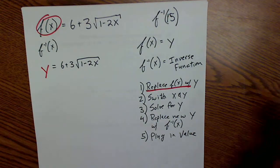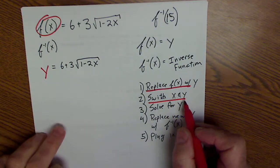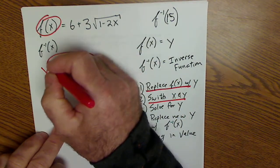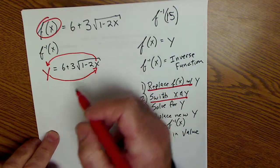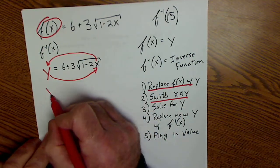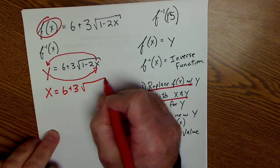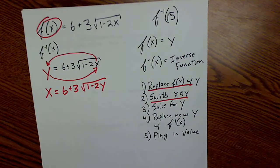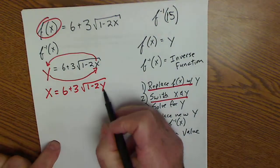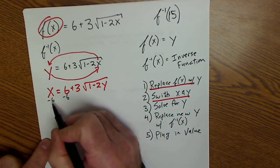Step 2 says to switch the x and the y. Take the x and put it where y was, and put y where x was. That gives me x = 6 + 3√(1 − 2y).